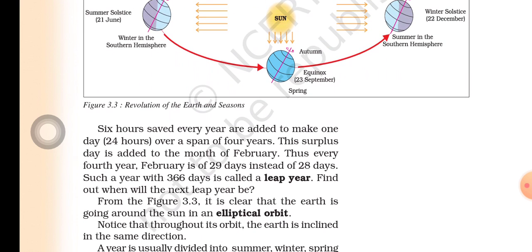The six hours saved every year are added to make one day over a span of four years. This surplus day is added to the month of February. Thus every fourth year, February has 29 days instead of 28 days.